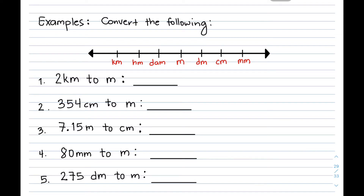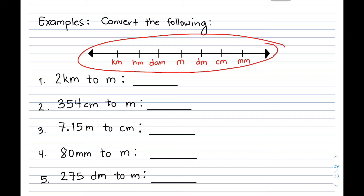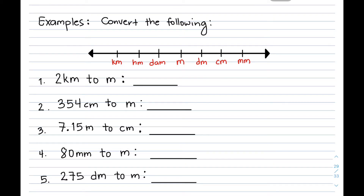We have the following examples to convert. Let's start with number 1: convert 2 kilometers to meters. How do we multiply or convert kilometers to meters? Focus on our metric converter. We have 2 kilometers, and we need to convert it to meters. We start at kilometer.